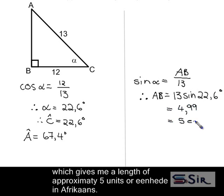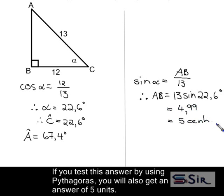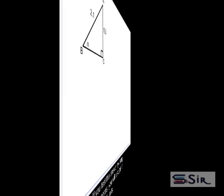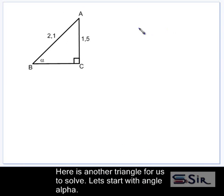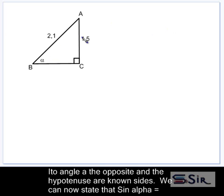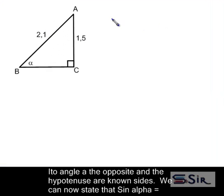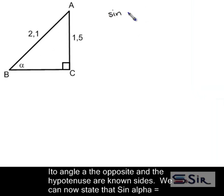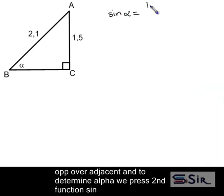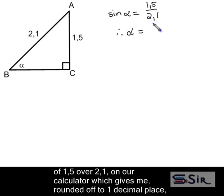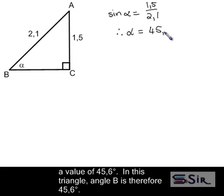If you test this answer using Pythagoras, you will also get an answer of 5 units. Here is another triangle for us to solve. Let's start with angle alpha. In terms of angle alpha, the opposite and the hypotenuse are known sides. We can now state that the sin of alpha is equal to the opposite side over the hypotenuse. And to determine alpha, we use second function sin of 1.5 over 2.1 on our calculator, which gives me, rounded off to 1 decimal place, a value of 45.6 degrees.